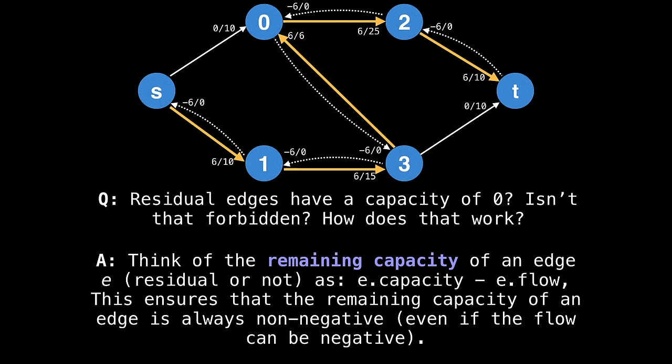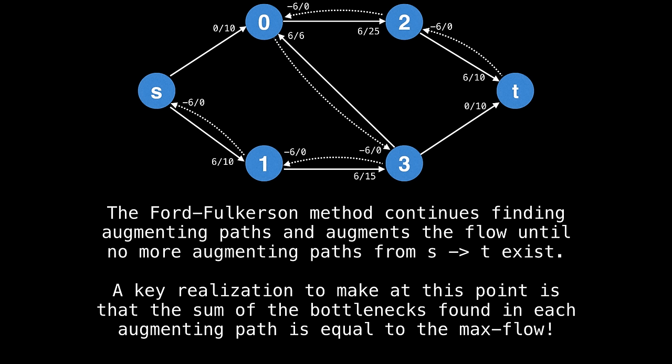With this method of augmenting the flow, you have to think of the remaining capacity of an edge E residual or not, as the difference between the capacity and the flow of that edge. That is the difference between the capacity and the flow is the true remaining capacity for that edge. This ensures that the remaining capacity of an edge is always non negative, even if the flow can be negative. For example, in the residual edges we have right now, zero minus minus six is six. So we know that all our residual edges actually have a remaining capacity of six.